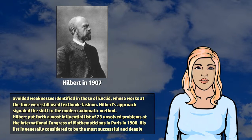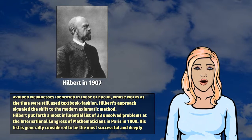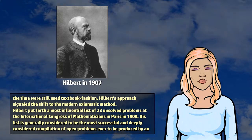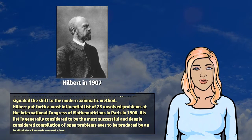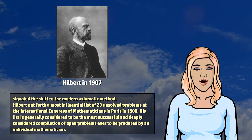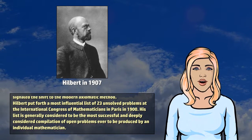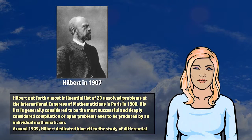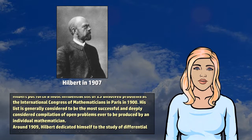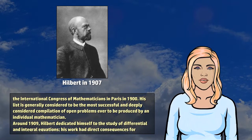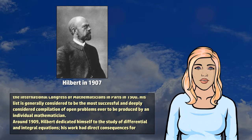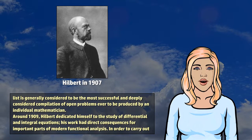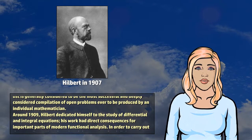Hilbert's approach signaled the shift to the modern axiomatic method. Hilbert put forth the most influential list of 23 unsolved problems at the International Congress of Mathematicians in Paris in 1900. His list is generally considered to be the most successful and deeply considered compilation of open problems ever to be produced by an individual mathematician.